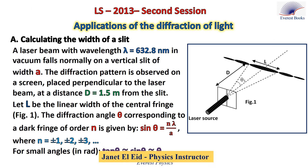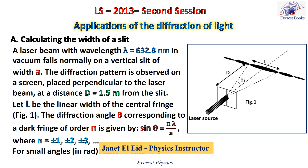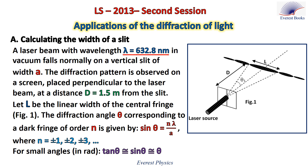This exercise consists of three parts. Let's start with the first part, which is about calculating the width of a slit in a diffraction setup. A laser beam with wavelength 632.8 nanometers in vacuum falls normally on a vertical slit of width A. The diffraction pattern is observed on a screen placed perpendicular to the laser beam at a distance of 1.5 meters from the slit.